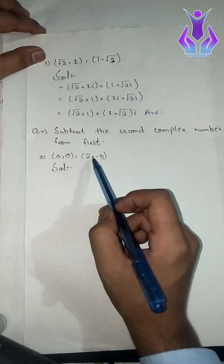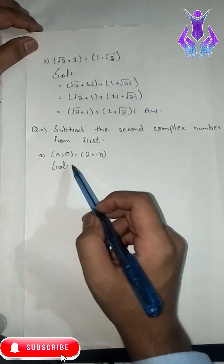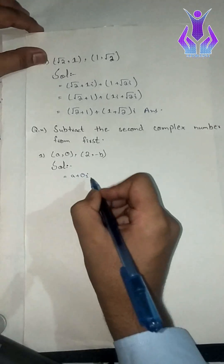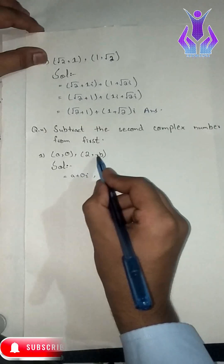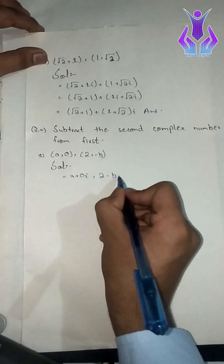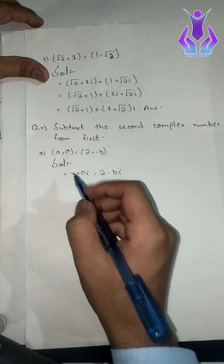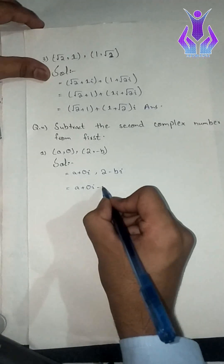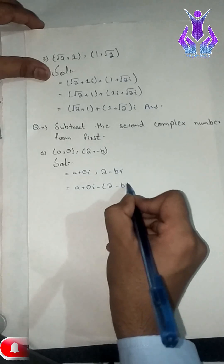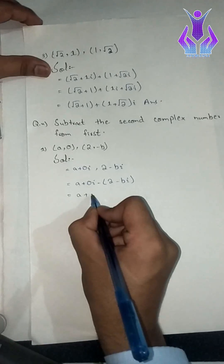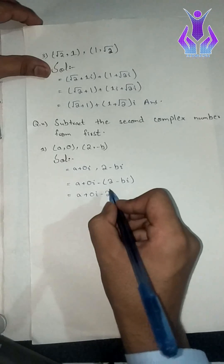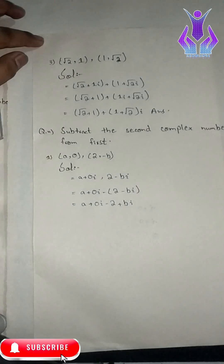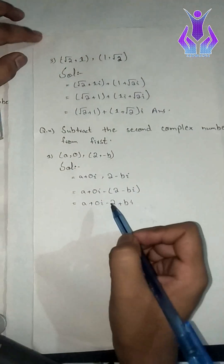The next question is: subtract the second complex number from the first. Two complex numbers are given. We have to subtract them. This will be a plus zero iota, and this will be 2 minus 2 minus iota. We write: a plus zero iota, minus, open bracket, minus 2 minus b iota. Minus into minus gives plus b iota. Now we separate real and imaginary parts.